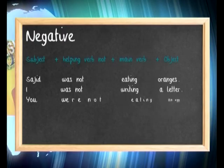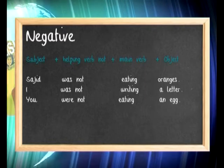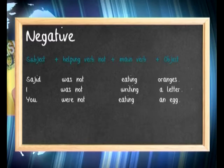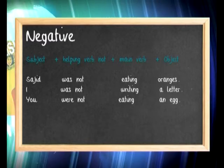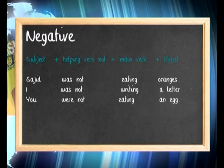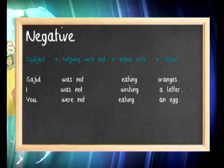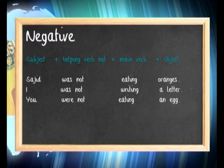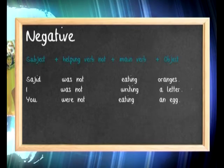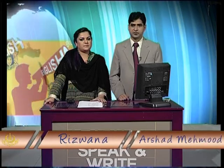For the negative form, the formula is the same: subject, helping verb, then not, then the main verb in -ing form, and then the object. So 'Sadat was eating oranges' changes to 'Sadat was not eating oranges' — the short form is wasn't. Another example: 'I was not writing a story.' The short form of were not is weren't. Note that many people say 'weren't' incorrectly. The present form is aren't, not 'aren't' — but focus here on the past form, weren't.